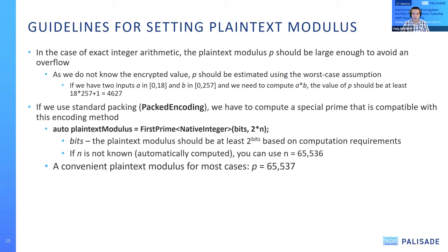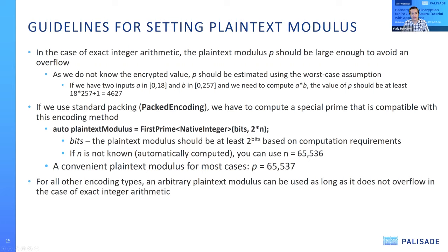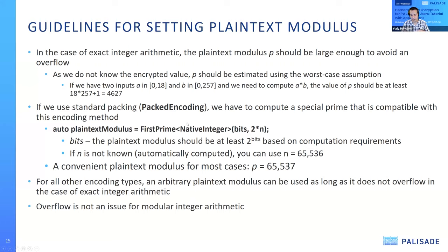It's very important to note that the plaintext modulus for packed encoding has special constraints. If the user selects a plaintext modulus that's not compatible, Palisade will throw an exception explaining that. For other encoding types — QAF-packed encoding and integer encoding — this constraint is gone; you just need to choose a number that doesn't cause overflow for exact integer arithmetic.